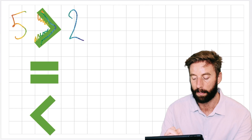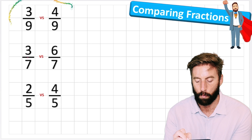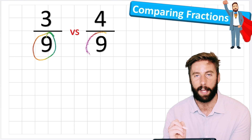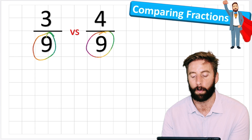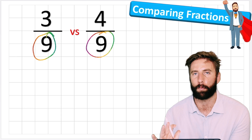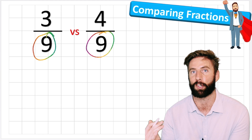Let's have a look at our first question: three ninths versus four ninths. Which one's greater? The first thing I notice is both of my denominators are the same - they're split into nine. Whatever we had - chocolate bar, people, car - we've split it evenly into nine. That's a really important word: evenly. We have split evenly because otherwise fractions don't work. So we split them into ninths: my first one says three ninths and my second says four ninths.